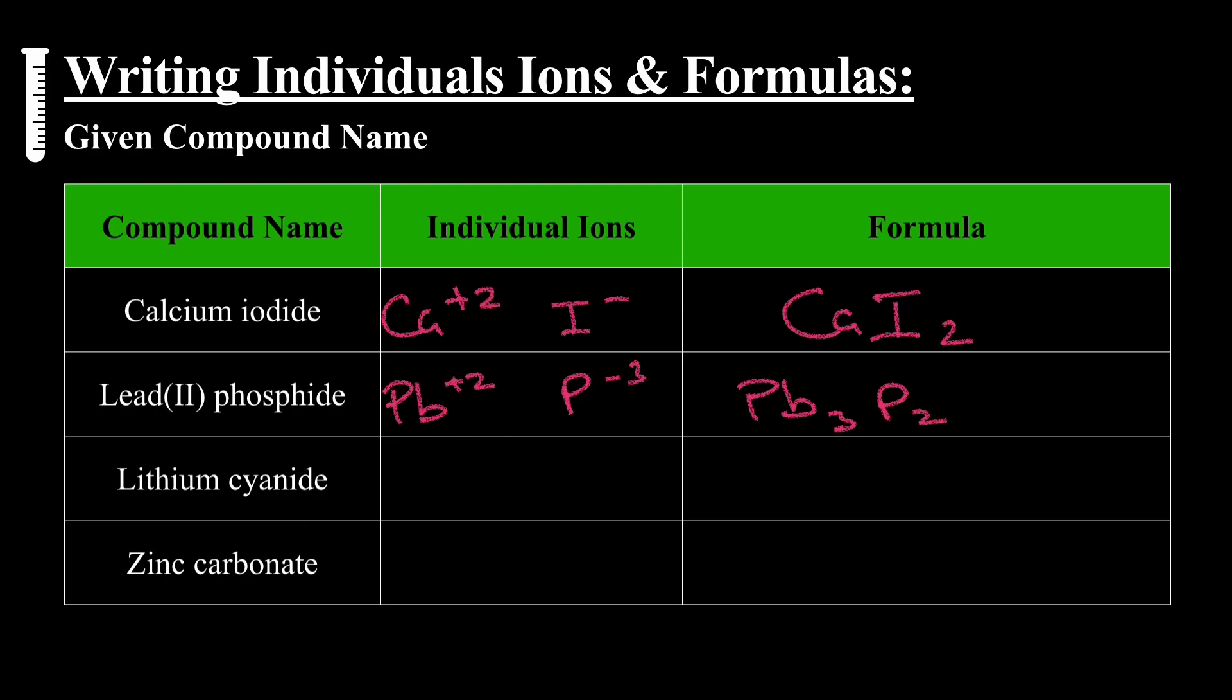Lithium cyanide. Lithium plus one, we know its group, plus one charge in that group. Cyanide, the polyatomic charge negative one, so Li plus, CN minus one, come together, same charge, LiCN.